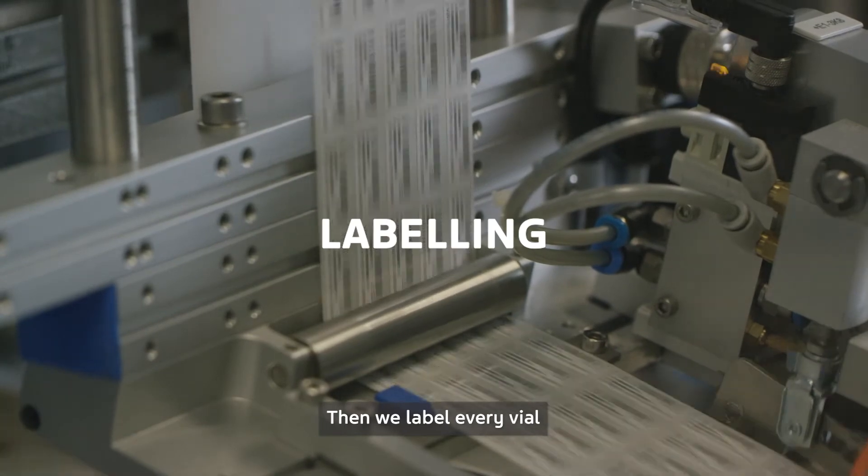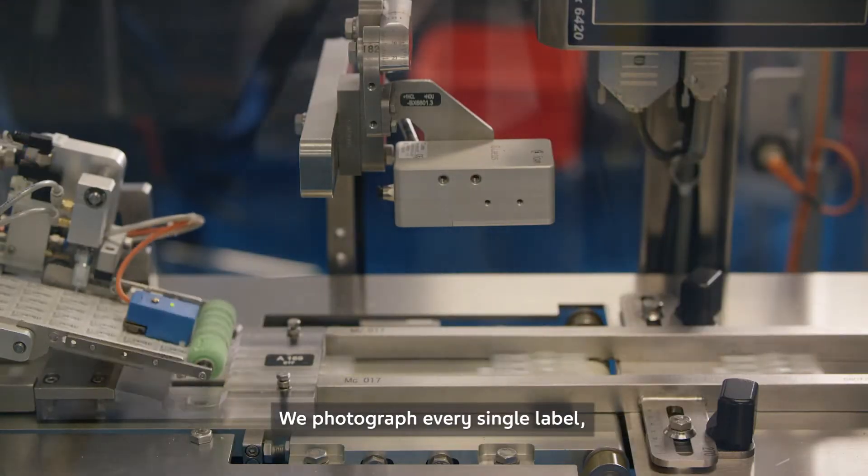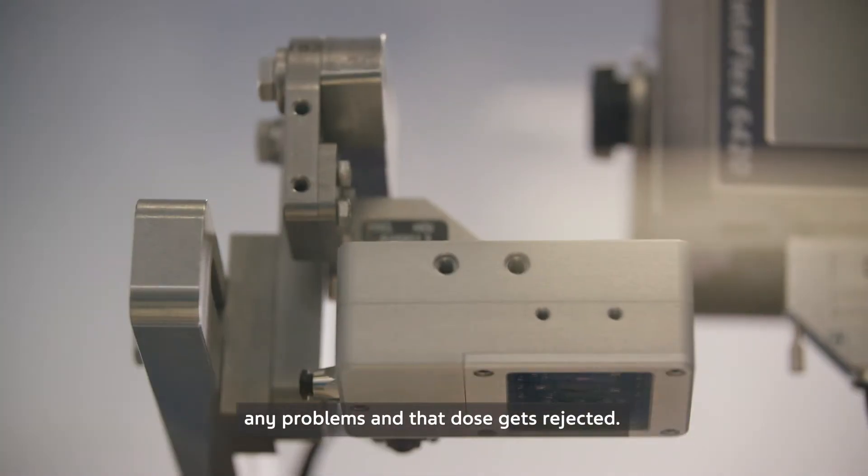Then we label every vial so the patient or the person giving the medication knows what's inside. We photograph every single label, and if there are any problems, that dose gets rejected.